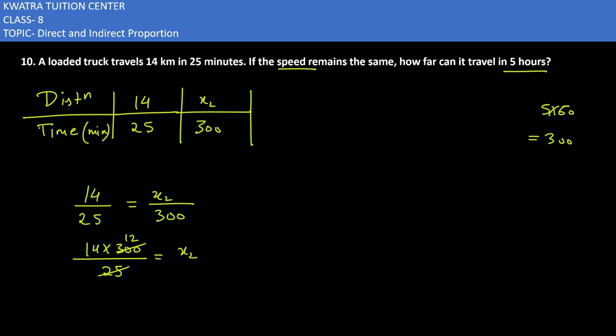12. 14 into 12. How much will it be? 168. 168 km would be the answer. That means in 5 hours, it will travel 168 km.